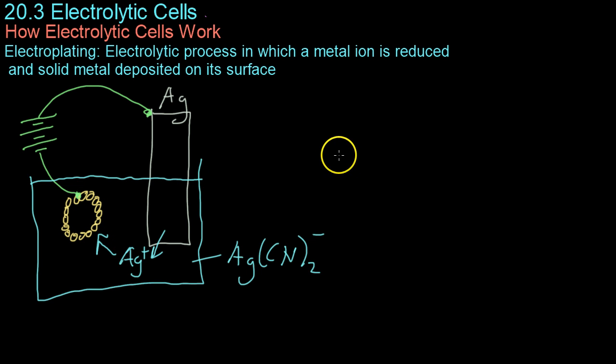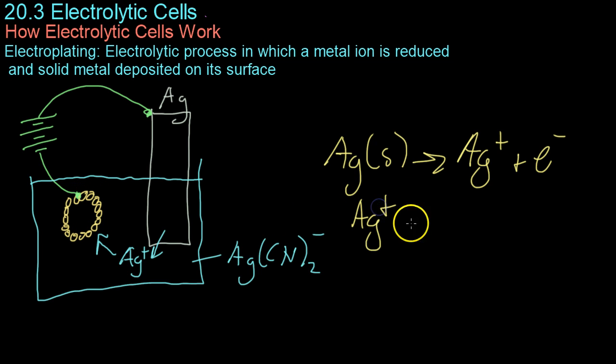And basically how this works is that the silver breaks up into an ion in solution as well as an electron. Then the silver ions pass through the solution to complete the circuit going over to this bracelet, where the silver ions combine with an electron that makes its way through this wire, through the batteries, which are forcing the electrons to go this way.